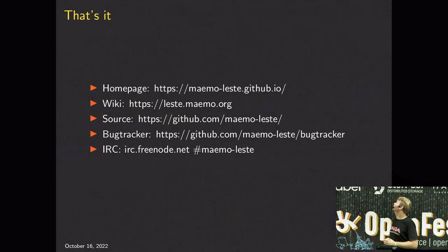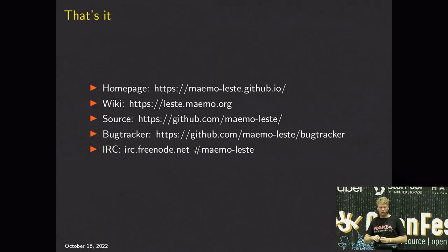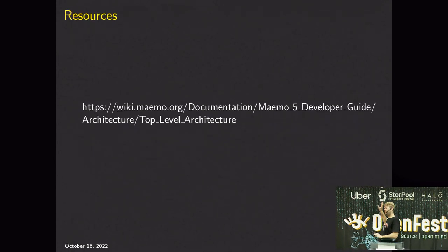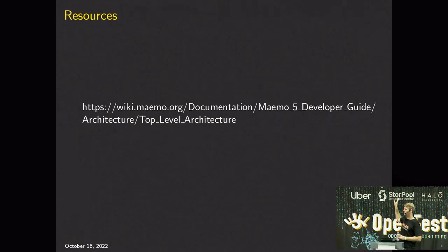That's it. Our website is on GitHub Pages. We have a wiki, all the source code is on GitHub, we have a bug tracker there, and we have an IRC channel. The last thing I want to say is that I based some of my information on the original Maemo architecture and updated it for everything we use. Everything I listed is current for us. Thank you.